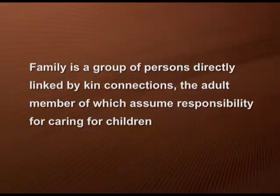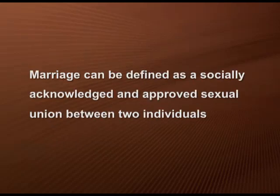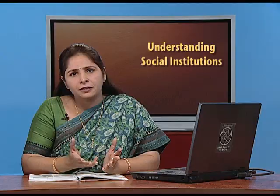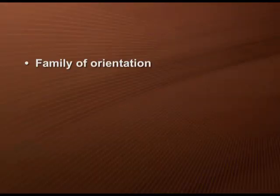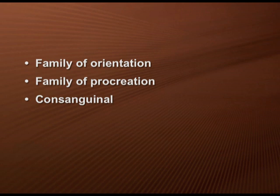Let us understand what family, marriage, and kinship mean. Family is a group of persons directly linked by kin connections, the adult members of which assume responsibility for caring for children. Kinship ties are connections between individuals established either through marriage or through lines of descent that connect blood relatives. Marriage can be defined as a socially acknowledged and approved sexual union between two individuals. When two people marry, they become kin to one another, and the marriage bond also connects together a wide range of people. A family one is born into is called the family of orientation, while a family one marries into is called the family of procreation. Relations through blood are called consanguinal relationships, and those through marriage are called affinal relationships.